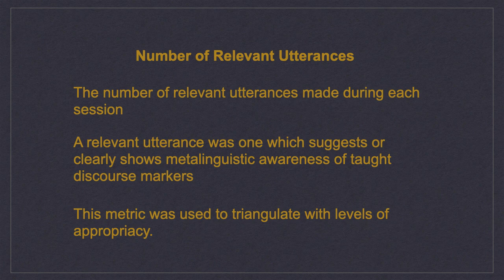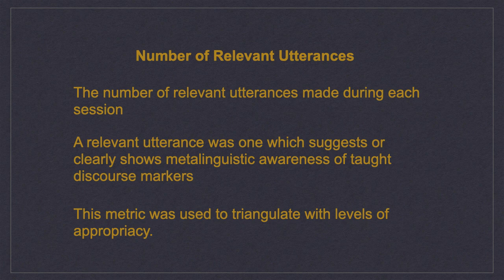During the text reconstruction exercise sessions, recording devices were used to record the utterances made by students during their work. This metric was used to triangulate with levels of appropriacy in order to draw a line between text reconstruction, expressions of explicit metalinguistic knowledge, and appropriate discourse marker use. If rises in levels of appropriacy are not preceded by relevant utterances, or relevant utterances are not followed by rises in level of appropriacy, then the claim for a causal link between text reconstruction exercises and any rises in the levels of appropriacy was considered as not supported, although also not disproven.